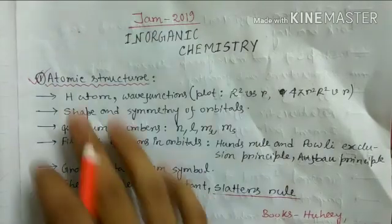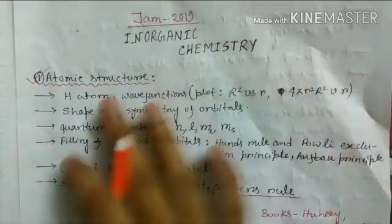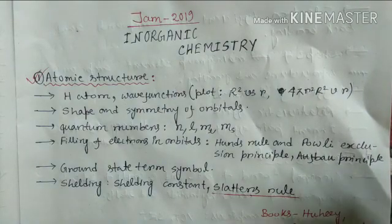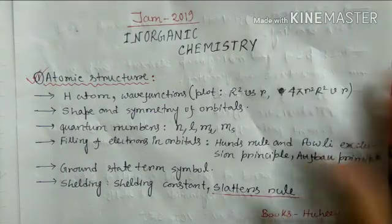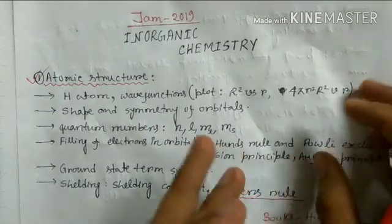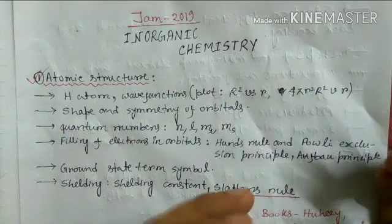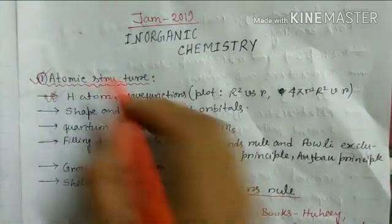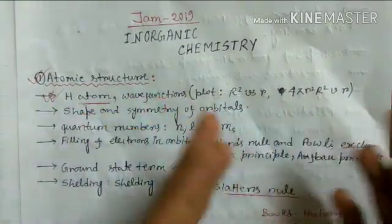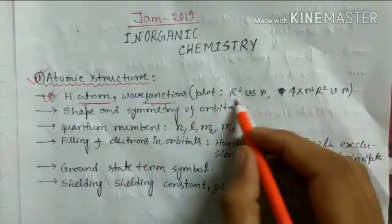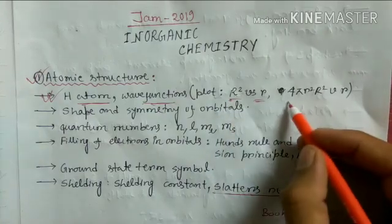Our first topic is atomic structure. Although atomic structure is mentioned in the physical chemistry part of the syllabus, the qualitative part included in the JAM syllabus is mostly found in inorganic chemistry books. Physical chemistry books have quantum mechanical treatment, but that is not included in JAM. Topics include the hydrogen atom, its basic structure, and the wave function — plots like R² vs R or 4πR²|R|² vs R.